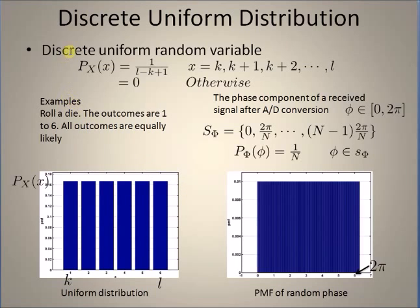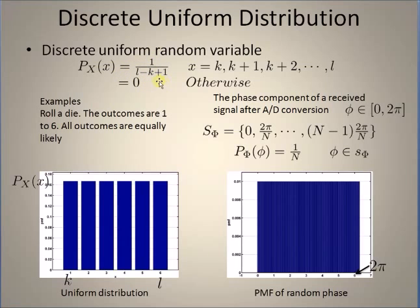Let us look at the probability mass function of the discrete uniform random variable. Assuming that the random variable x belongs to the range of values from k to l where k is less than l, the number of possible values for x is given by l minus k plus 1. The probability mass function is defined as 1 over l minus k plus 1 — that is, 1 divided by the number of possible values. In other words, the PMF of a uniformly distributed random variable equals 1 divided by the total number of possible outcomes in the sample space, and it is 0 for all values of x that do not belong to the sequence k to l.